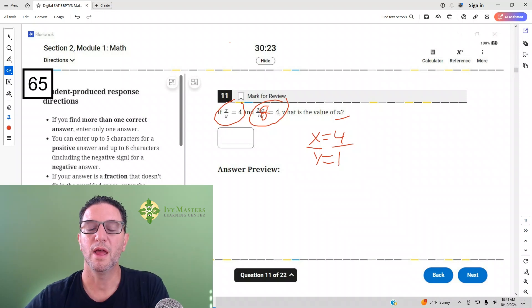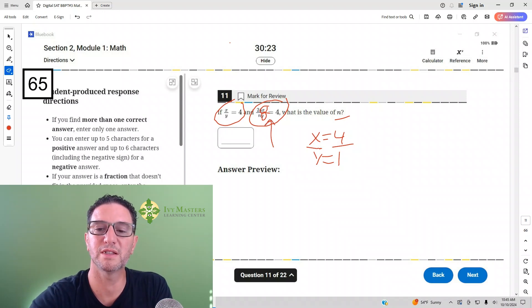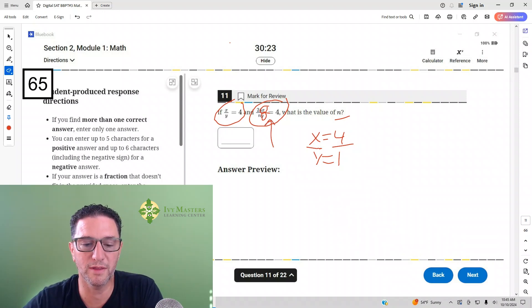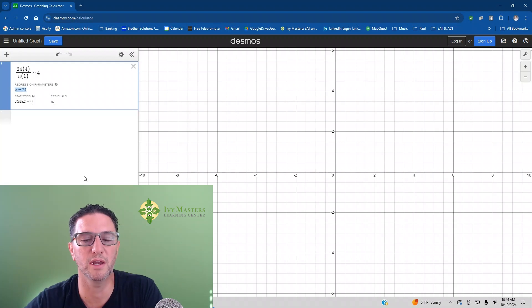In place of x you put 4, in place of y you put 1. But instead of the equal sign, you got to put the tilde. And when you plug that into Desmos, it gives you your answer: n equals 24. Mark it, move on.